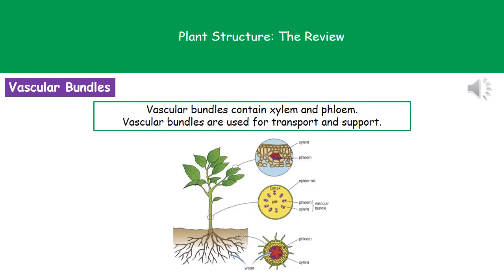Inside our plant we've got this very important structure called the vascular bundle. The vascular bundle is made up of two tissues whose names we need to remember: xylem and phloem. We use these vascular bundles for transport and support, and their locations are different in different parts of the plant. In the root, the xylem is in the middle with the phloem around the outside. In the stem, the vascular bundles are arranged in a circle towards the outside. And in the leaf, the vascular bundles are arranged in those little veins that run through it.